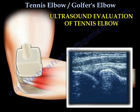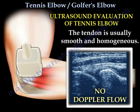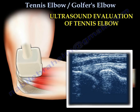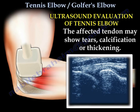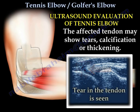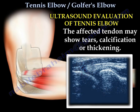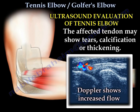The normal tendon is usually smooth and homogeneous and has no Doppler flow. The affected tendon may show tears, calcifications, or thickening. Here you can see a picture of a tear in the tendon, and the Doppler shows increased flow.